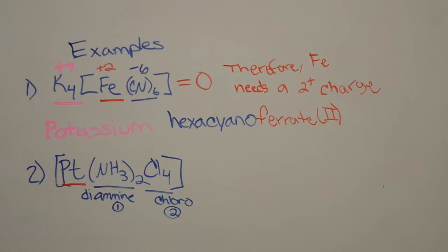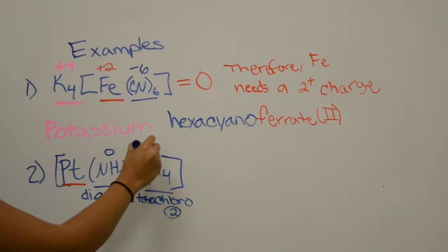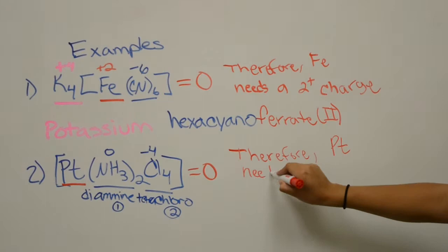We know amine has a 0 charge and chloro has a negative 1 charge, but since there are 4, it has an overall charge of negative 4. We need an overall charge of 0. Therefore, platinum needs a positive 4 charge, giving us the overall name of diamine tetrachloroplatinum IV.